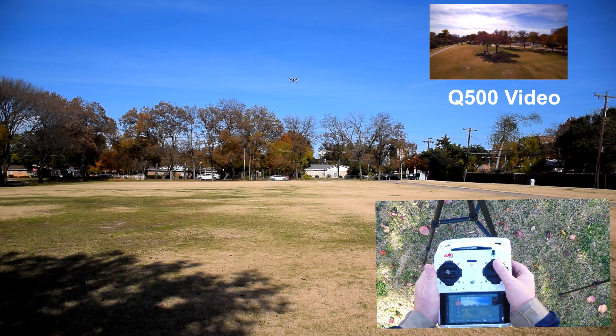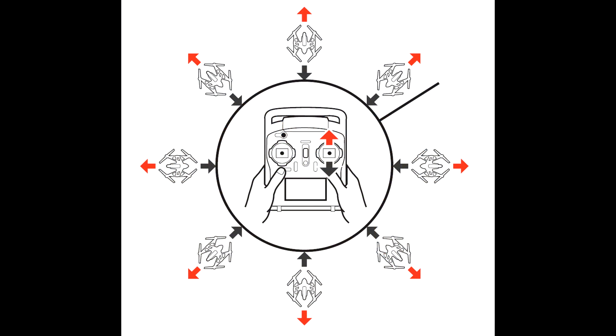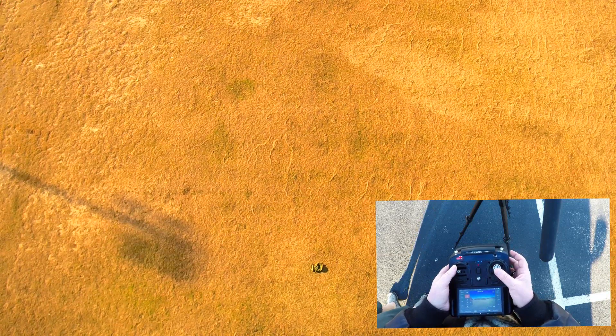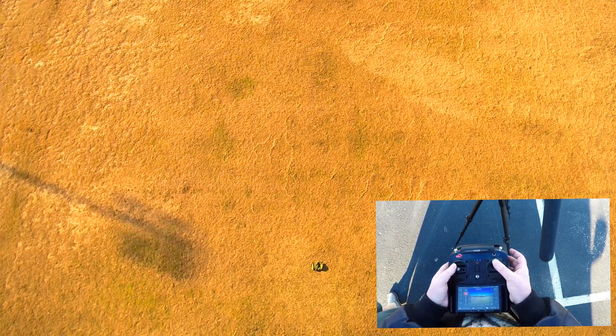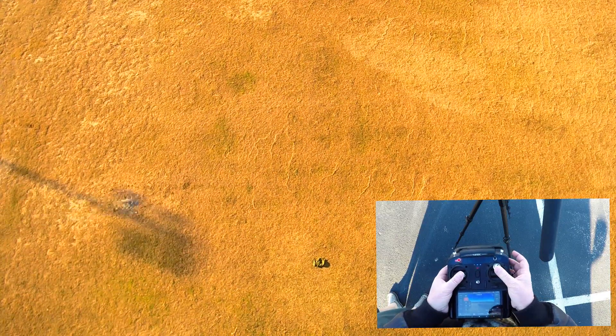Let's start with Smart Mode. Remember, the direction your nose is pointed has no effect on what direction the aircraft flies. Watch what happens when I yaw the aircraft with the left stick and use the right stick to go forward — the aircraft flies on a straight line, spinning like a top as it goes.